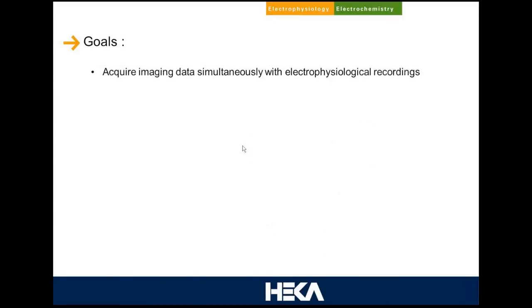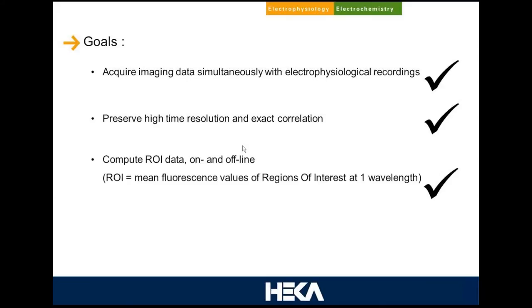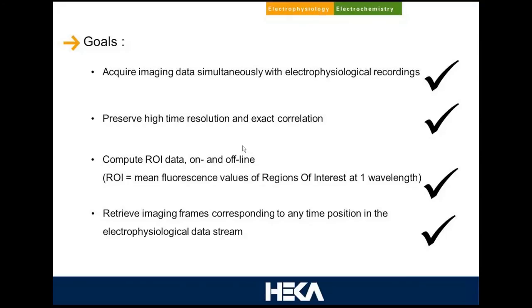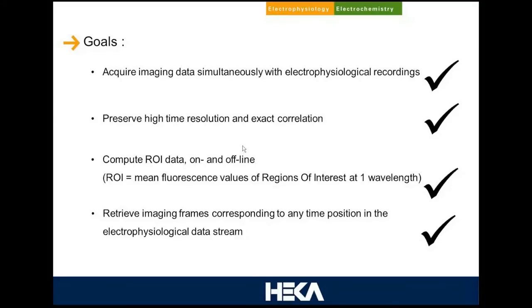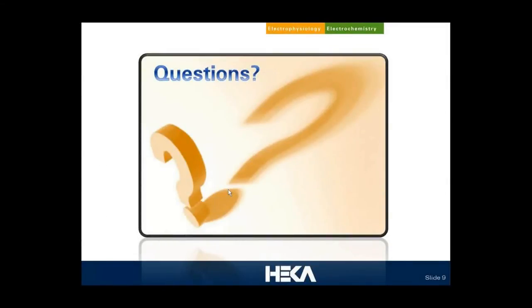We developed this system with the following goals: acquire imaging data and physiological data — that works. Preserve high time resolution and exact correlation — shown to work. Compute region of interest both during the experiment and later for recalibration — works well. And retrieve frames corresponding to any time position in the physiological data stream — that also works. That's the overview of what Patchmaster does when you need simultaneous recording together with imaging data. Thanks a lot for your attention.